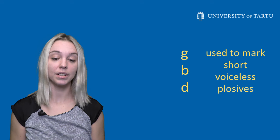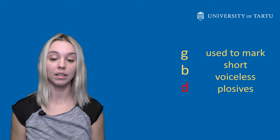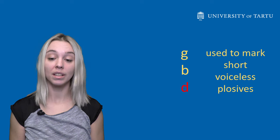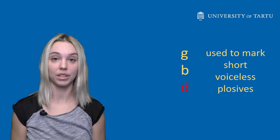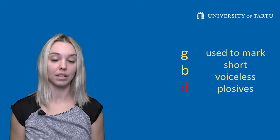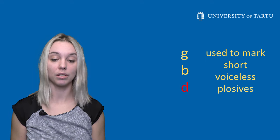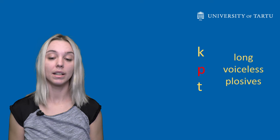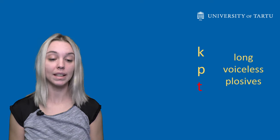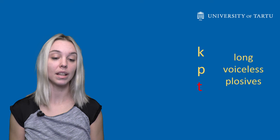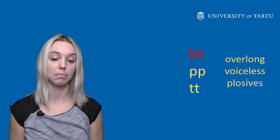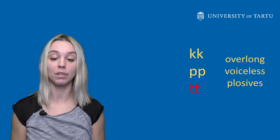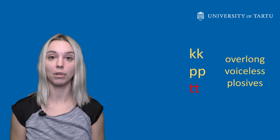you find the letters g, b, d, which mark voiced plosives in many languages. But in Estonian, they are short while the letters k, p, t mark long, voiceless plosives and k, p, t are used to mark overlong, voiceless plosives.